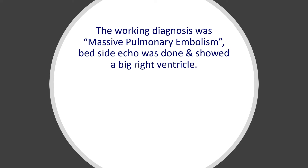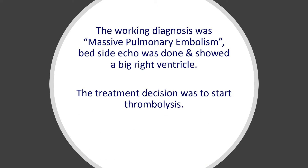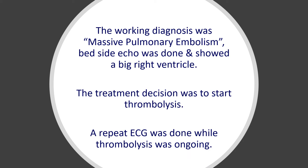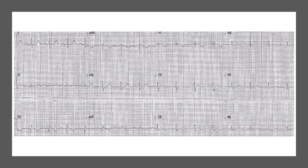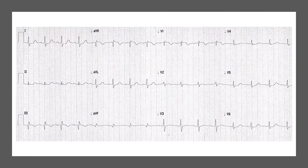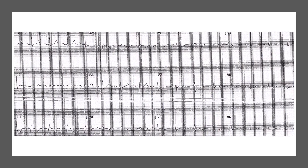She had a bedside echo that showed a big right ventricle, so the treatment decision was to start immediate thrombolysis. While thrombolysis was ongoing, a repeat ECG was done. This will be the true beginning of our case — this was her second ECG done during thrombolysis. I want you to pause the video, have a proper look at both ECGs, compare them, find the differences, and correlate this with the provisional diagnosis.